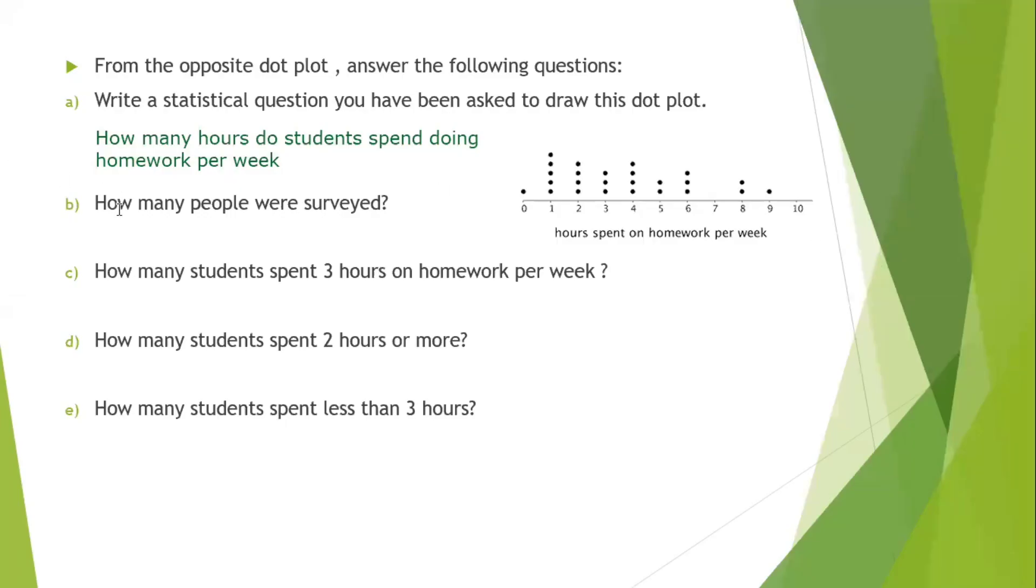B, how many people were surveyed? To know the number of people, you have to count the dots. One, two, three, four, five, six, seven, eight, nine, ten, eleven, twelve, thirteen, fourteen, fifteen, sixteen, seventeen, eighteen, nineteen, twenty, twenty-one, twenty-two, twenty-three, twenty-four, twenty-five. So the number of students is twenty-five.